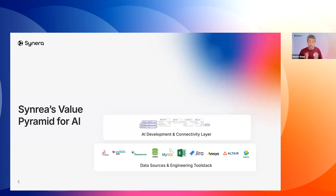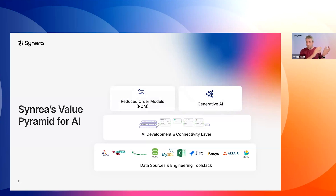We will cover this in the live demonstration later. Once you have built the connectivity layer, you can really start working with AI. Today we will cover especially two topics: reduced order models, which can predict based on training data, and then the more advanced generative AI topics.